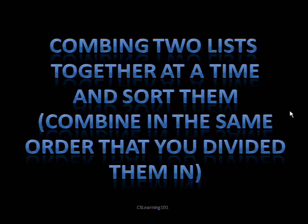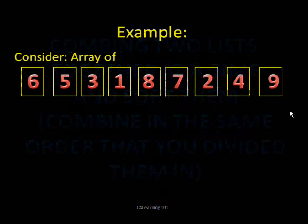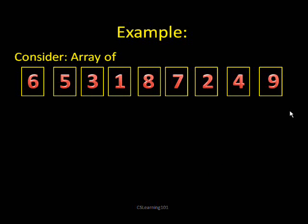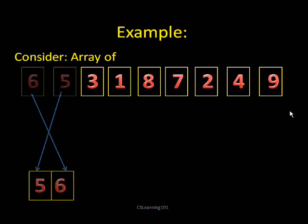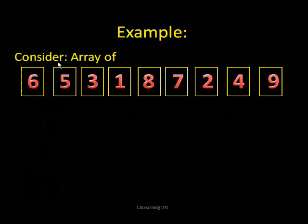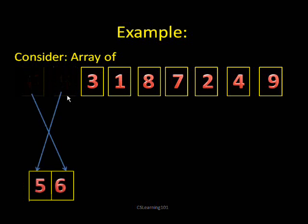Looking at these individual lists, you would take the first two, compare them together, and combine them into a new sorted list. Five is less than six, so you put five first and then six. Then you look at the next two: three and one. One is less than three, so you put one and then three. You keep doing this for all the lists.